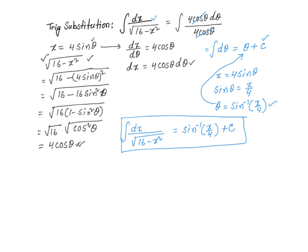Now, I'd like to add one more point here. You could have done the following substitution for x: x is equal to 4 cosine of theta. This would have worked just fine. You would need to follow the exact same process for x equal to 4 sine of theta, and you should be able to get a final answer in a slightly different format — instead of sine inverse something, you're going to get negative cosine inverse of x over 4 plus c. I hope that this discussion was helpful. Thank you very much.